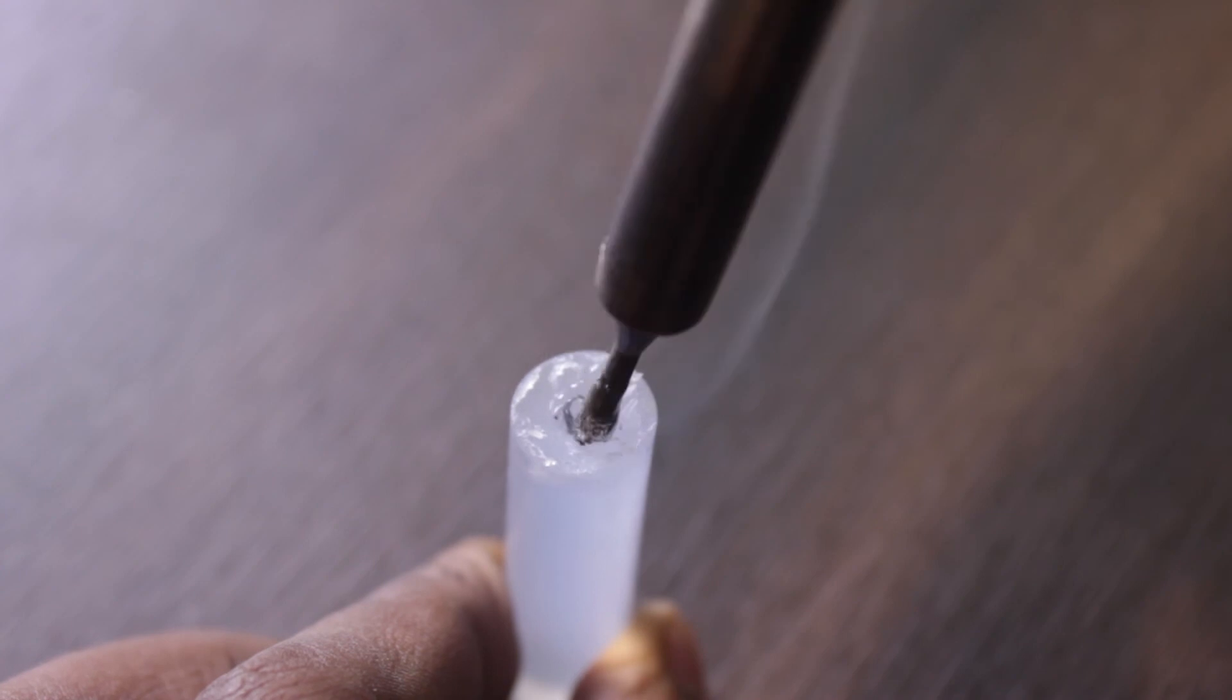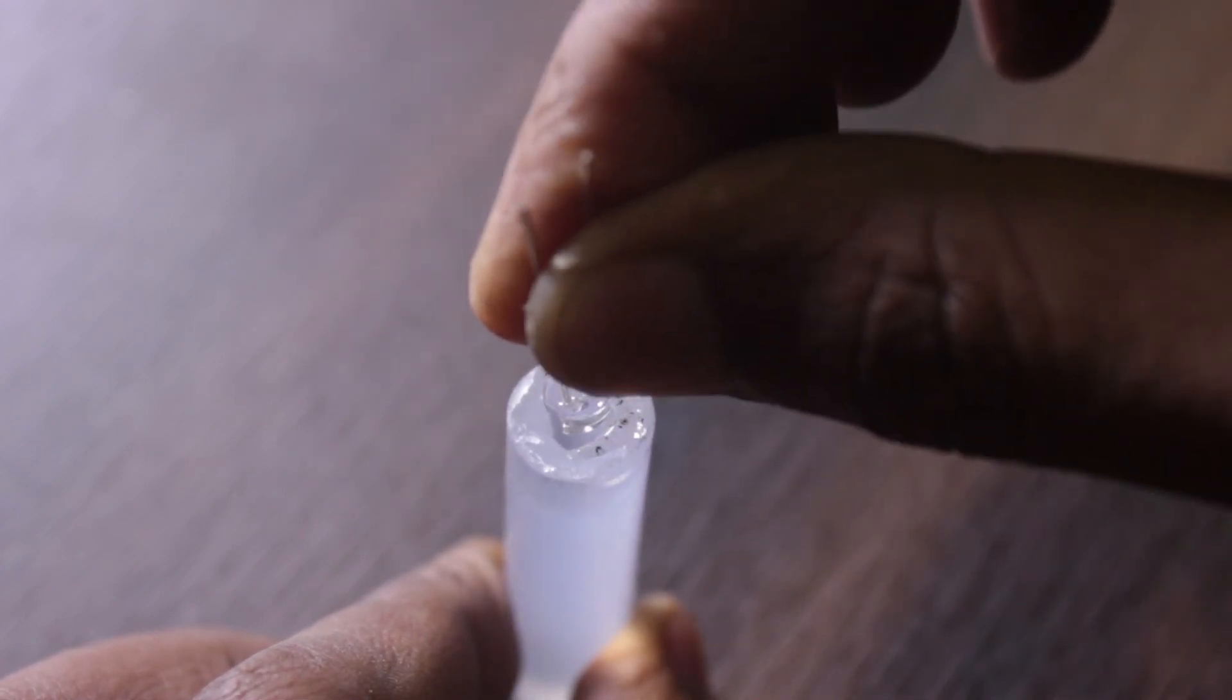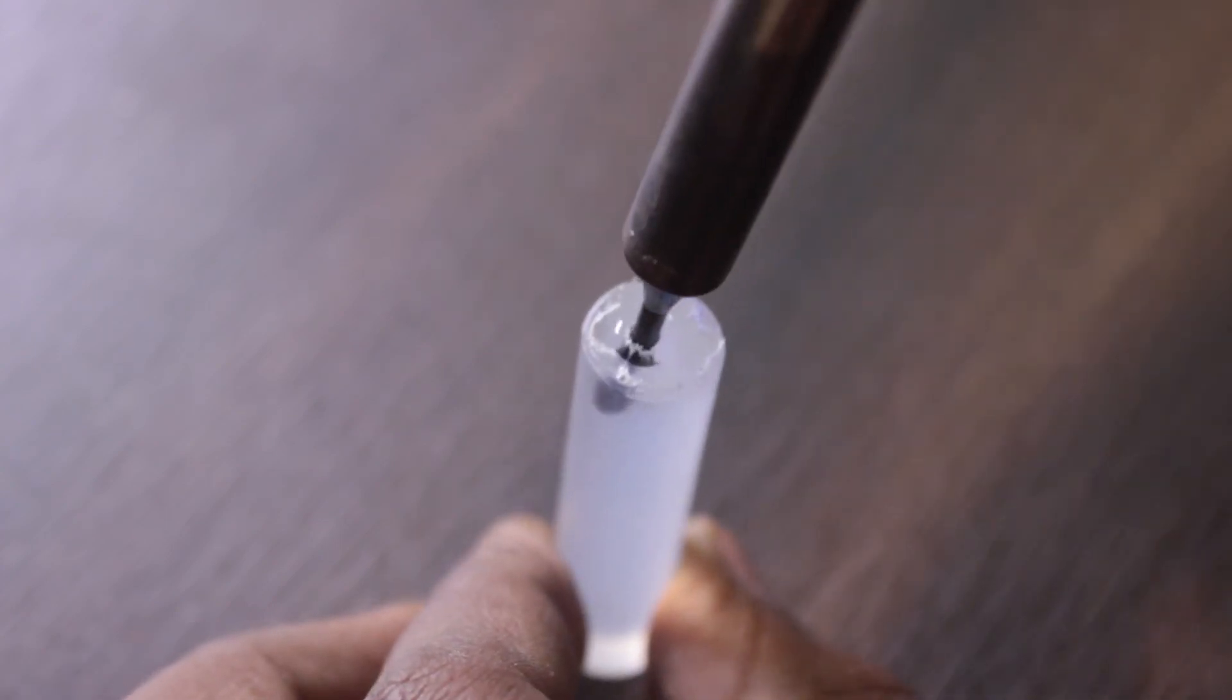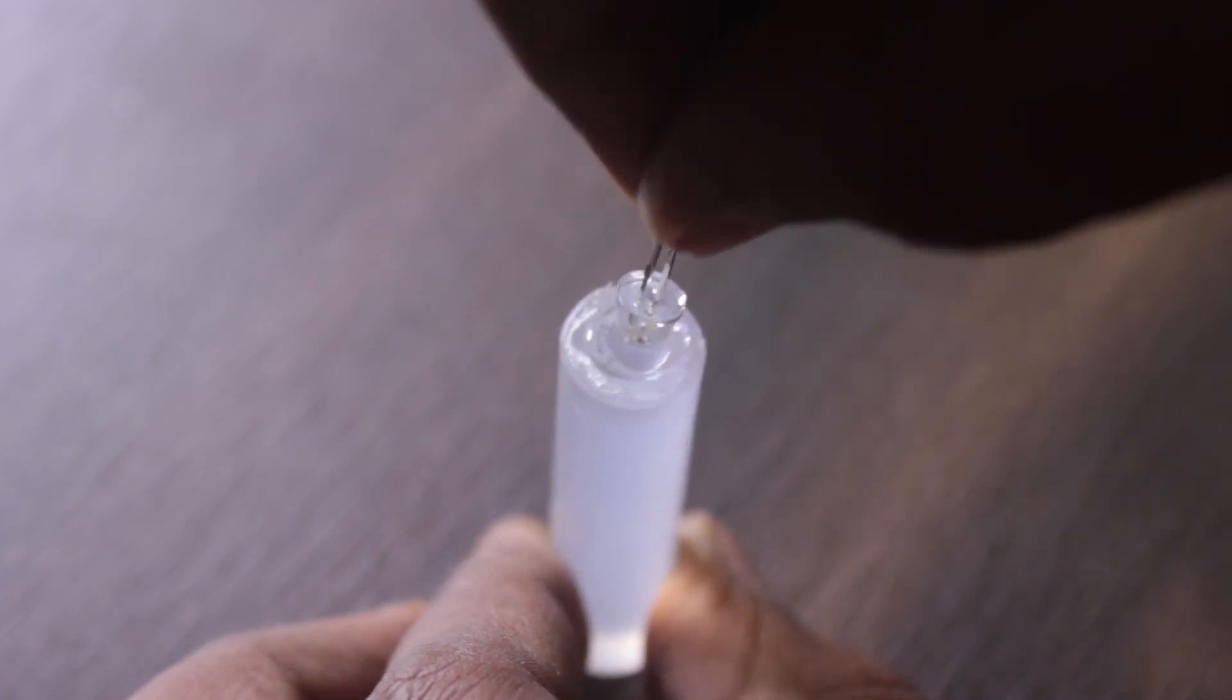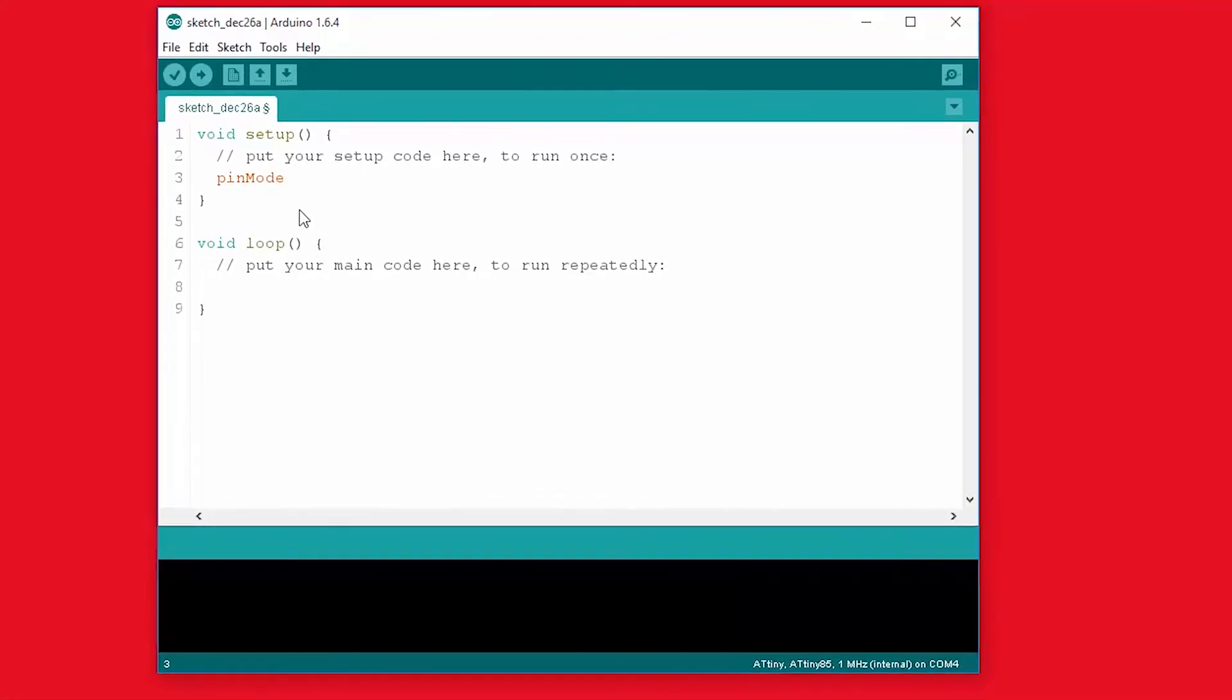I took my soldering iron and shoved it into the stick, then I put the LED in and I repeated the process to the other one. Make sure to clean the soldering bit afterwards. Then I wrote the code...